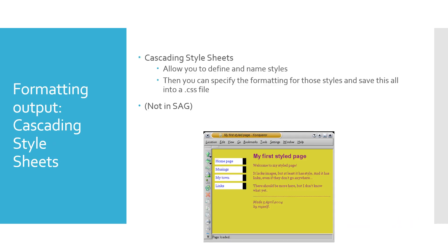Cascading Style Sheets, or CSS, allows you to define and name styles. For example, across a whole website you might use a certain style on all your different pages — you can create a CSS file and it will be applied to all the different pages. It is saved in a .css file.